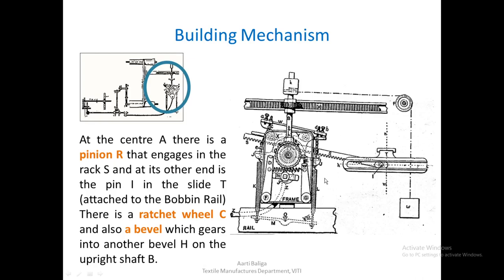There are still many more parts involved. On this center boss A there are three things: one is a ratchet, the second is pinion R that engages with rack S, and there is a third part — a bevel — which engages with the upright shaft and drives it.